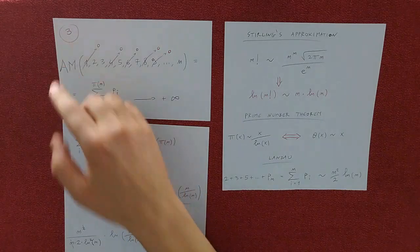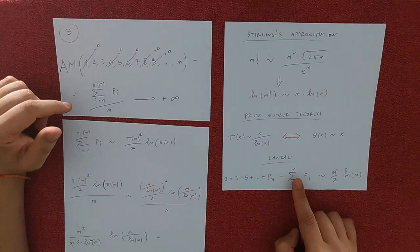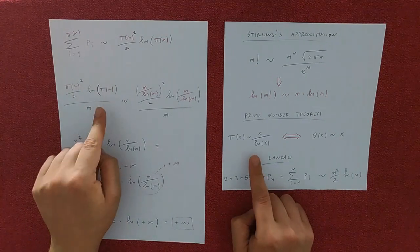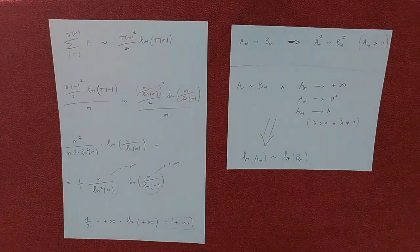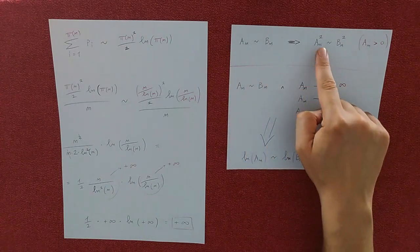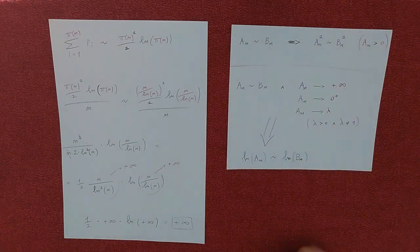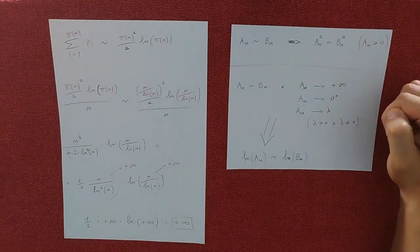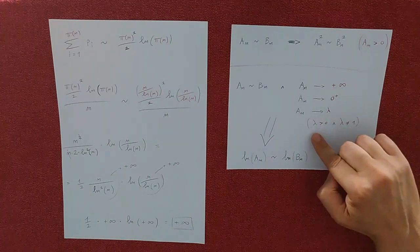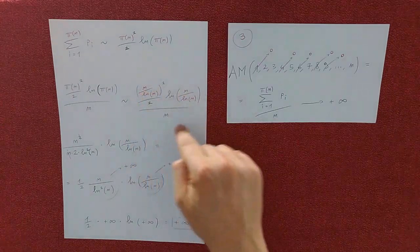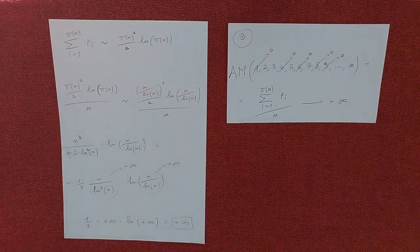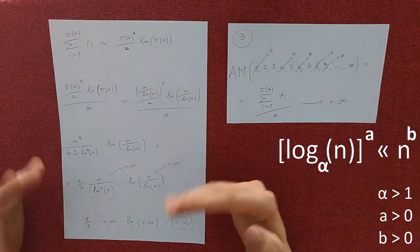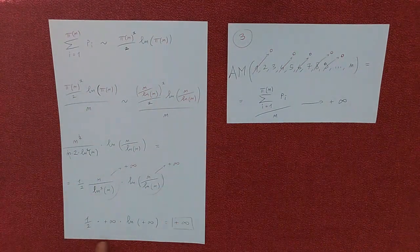For the third limit we'll use Landau. We substitute n with pi of n, add n to the denominator, and now use the prime number theorem. The asymptotic works well with the power and, fortunately, with the logarithm too. What is important is that the limit is infinity, zero-plus, or any positive number different from one. The n simplifies, and now these two fractions tend to infinity because n wins over the logarithm — and we have infinity.